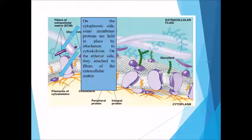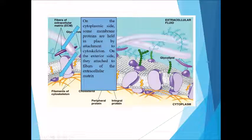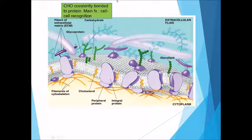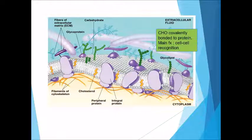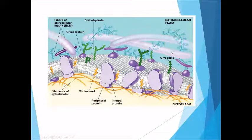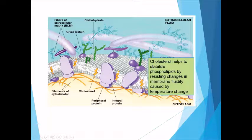On the cytoplasmic side, peripheral proteins are held in place by attachments to filaments of the cytoskeleton. On the exterior side, they attach to fibers of the extracellular matrix. Carbohydrates are covalently bonded to proteins, forming glycoproteins, whose main function is cell-to-cell recognition. Cholesterol also helps to stabilize the phospholipids by resisting changes in membrane fluidity caused by temperature.